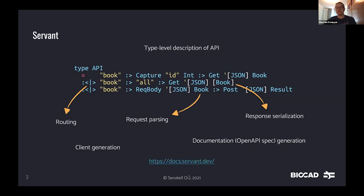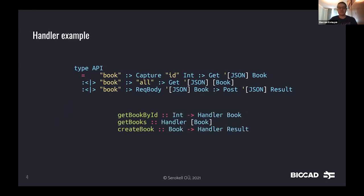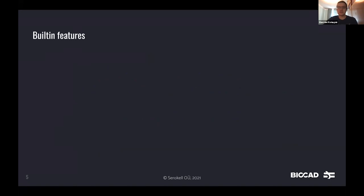You can access a good tutorial and many cookbook chapters on Servant via the link on the slide. Here is a quick example of handlers for this API: provided with the type-level description, Servant will expect us to write three handlers, and the argument types and return types of these handlers are just plain Haskell data types — you don't have to worry about serialization at all. You may also notice that handlers produce results in some `Handler` monad, but this is also customizable in Servant — you can use any monad you want, including MTL-style approaches.